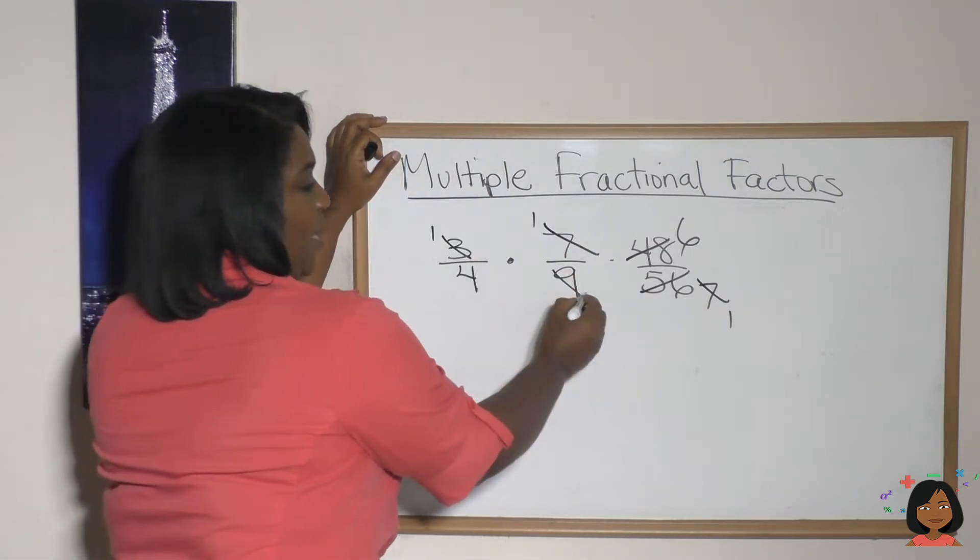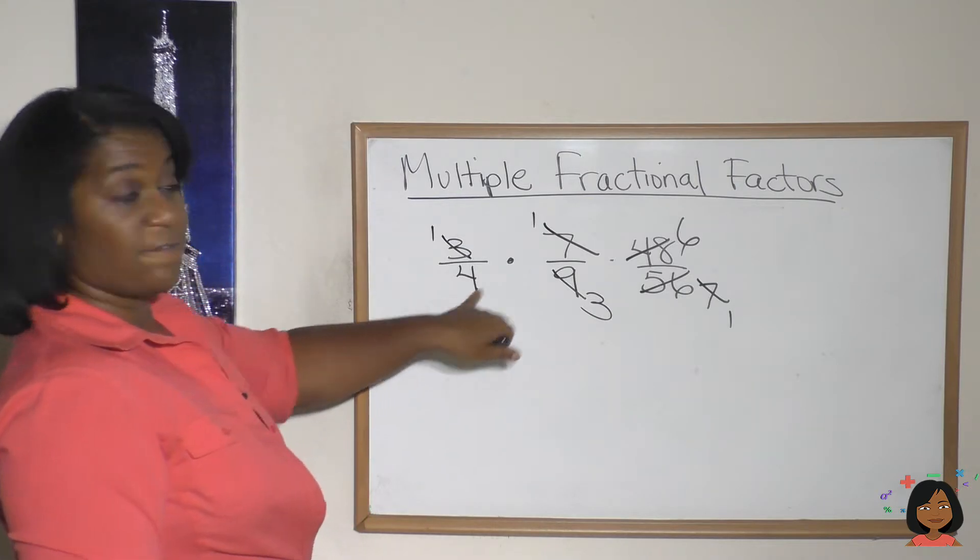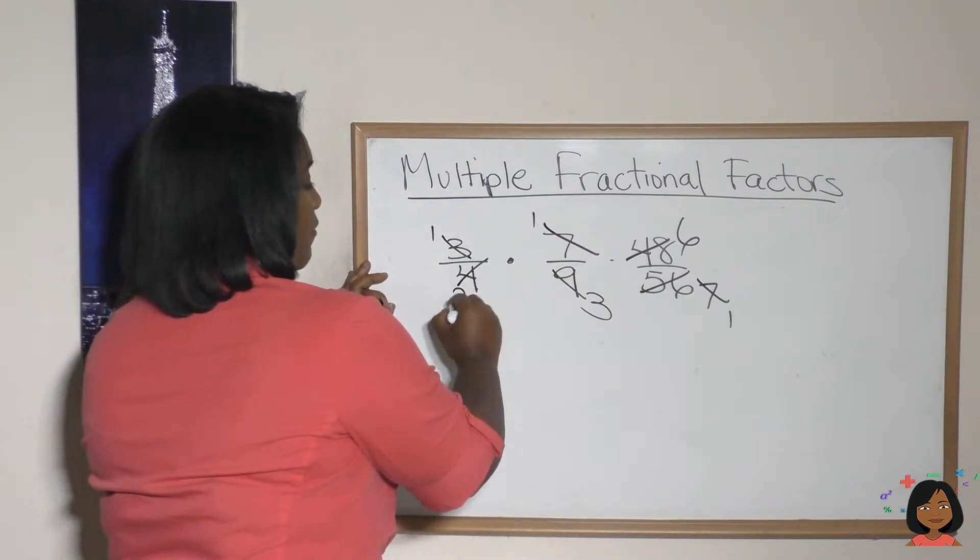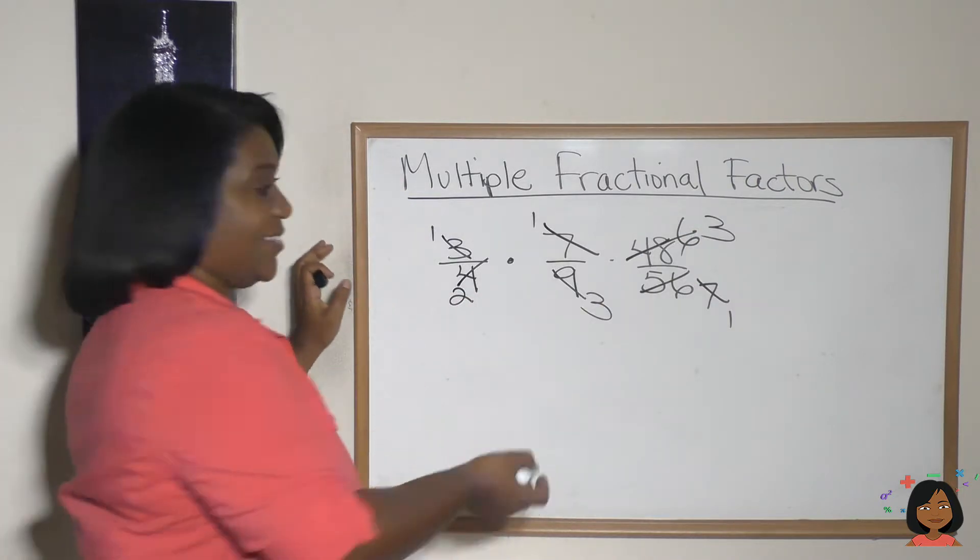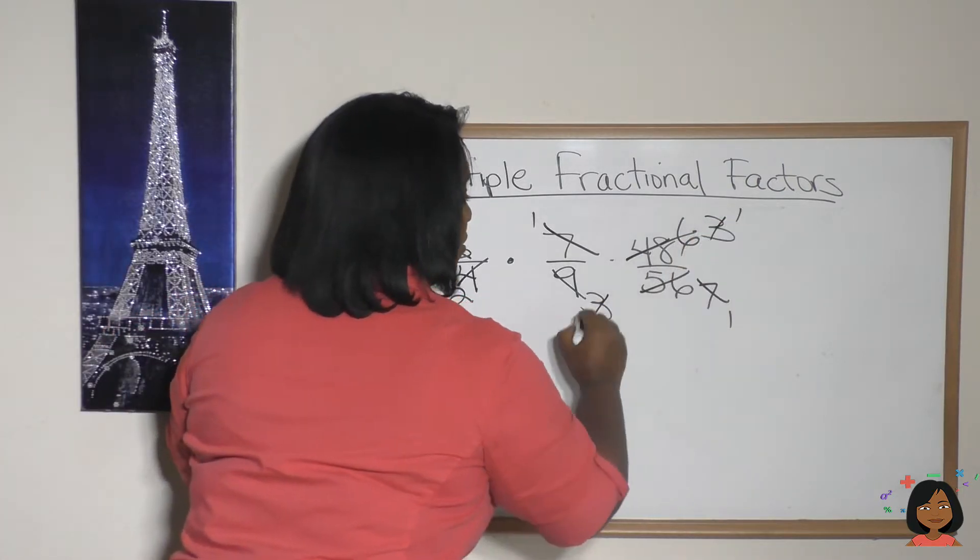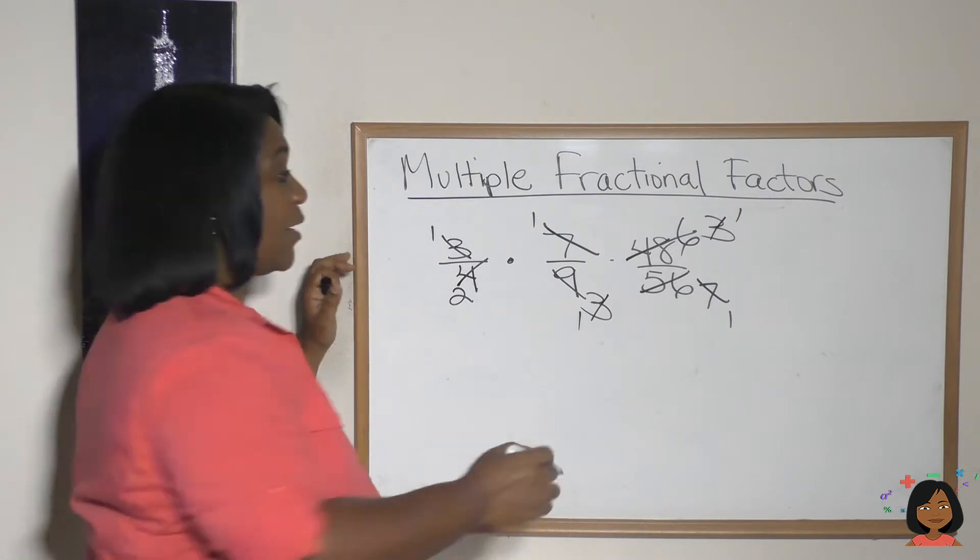I see three and this nine here, and I see four and the six. Two goes into both of those, and we're still not done. We've got a three and a three here, one and one.